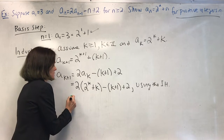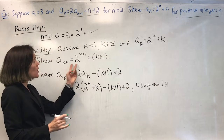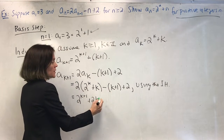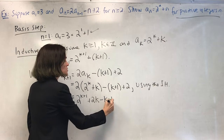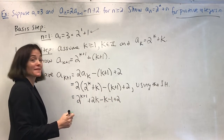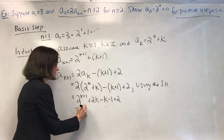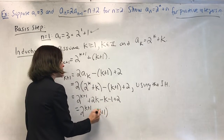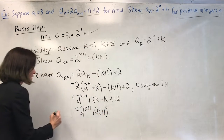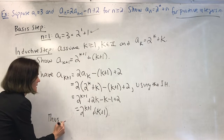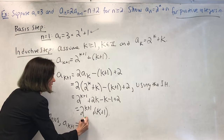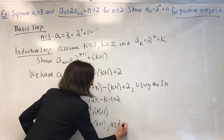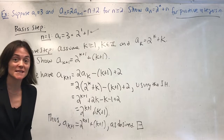Now comes some manipulation to get where we're trying to go. We have 2^(k+1) plus 2k, then minus k minus 1 plus 2. This simplifies: 2k minus k gives k, and 2 minus 1 gives 1. Therefore, a(k+1) equals 2^(k+1) plus (k+1), as desired. This concludes this proof by induction.